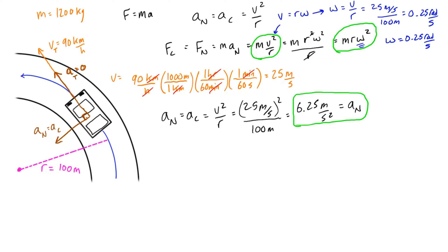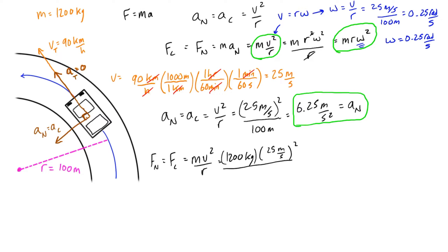To solve for the normal force — the force that results in this acceleration — we can solve both ways. Starting with the first method: F_n = mv²/r = 1200 kg × (25 m/s)² / 100 m. This works out to 7500 kilogram·meters per second squared, which is 7500 newtons, or 7.5 kilonewtons.